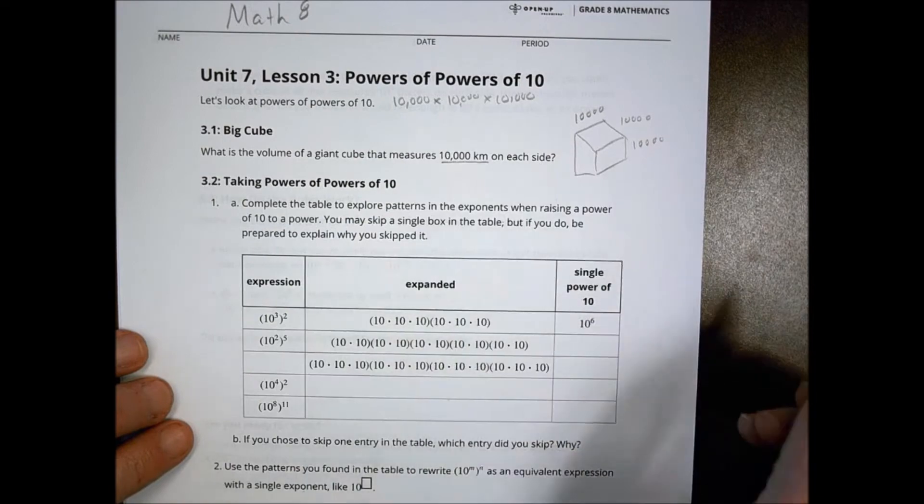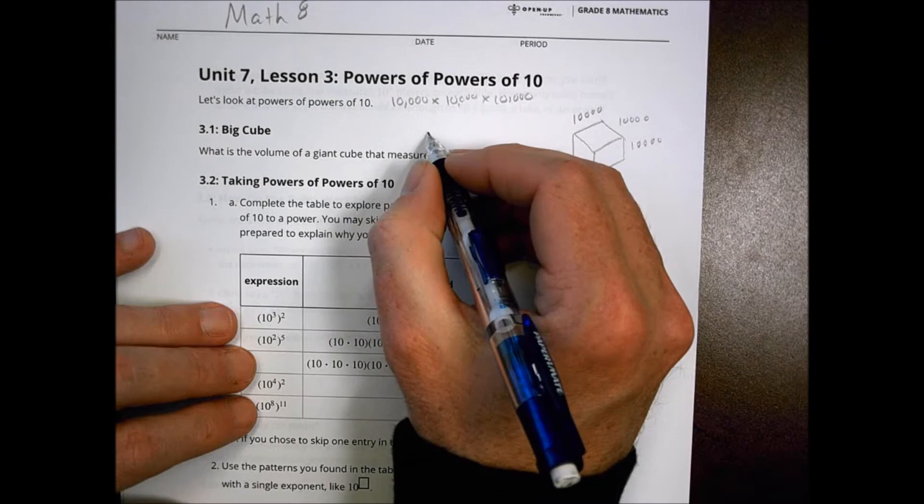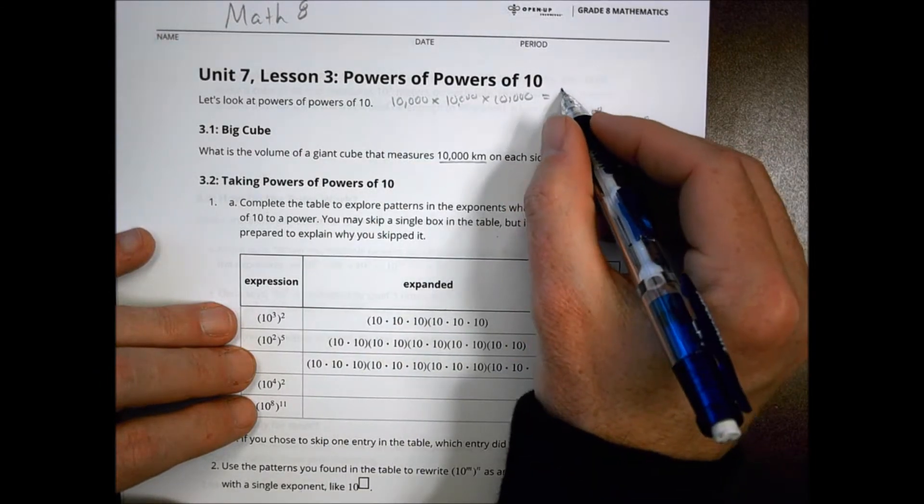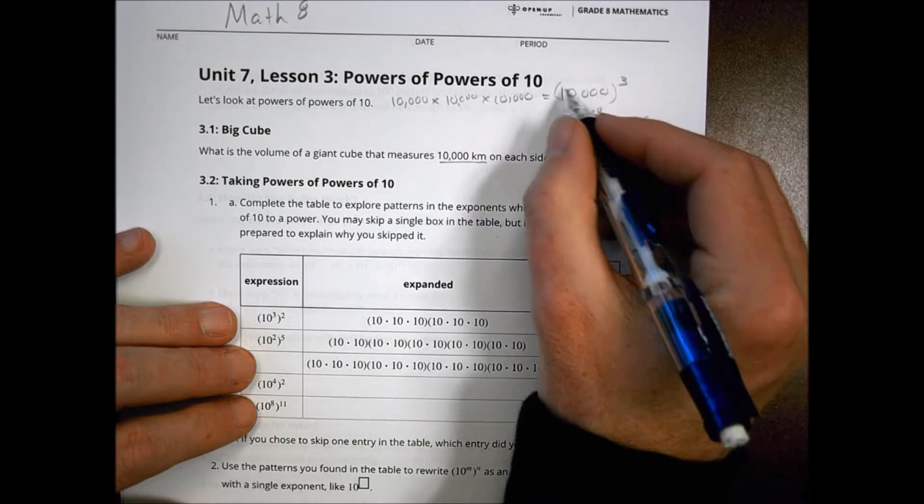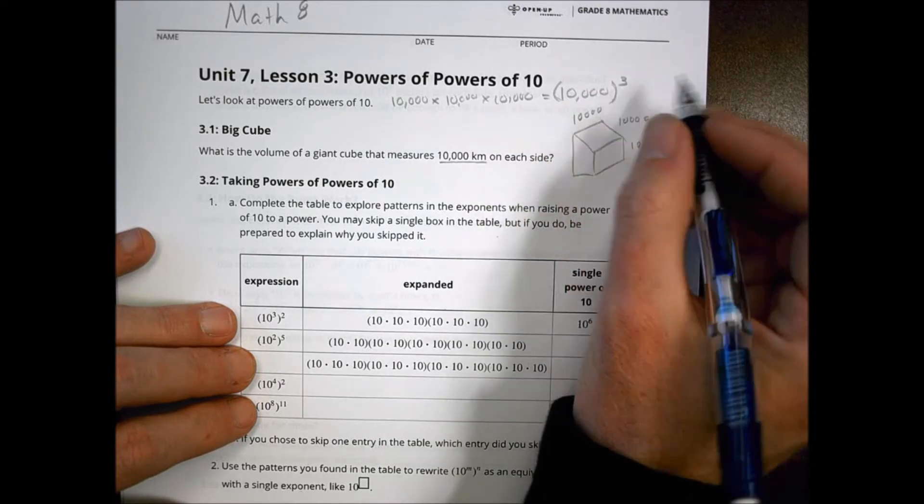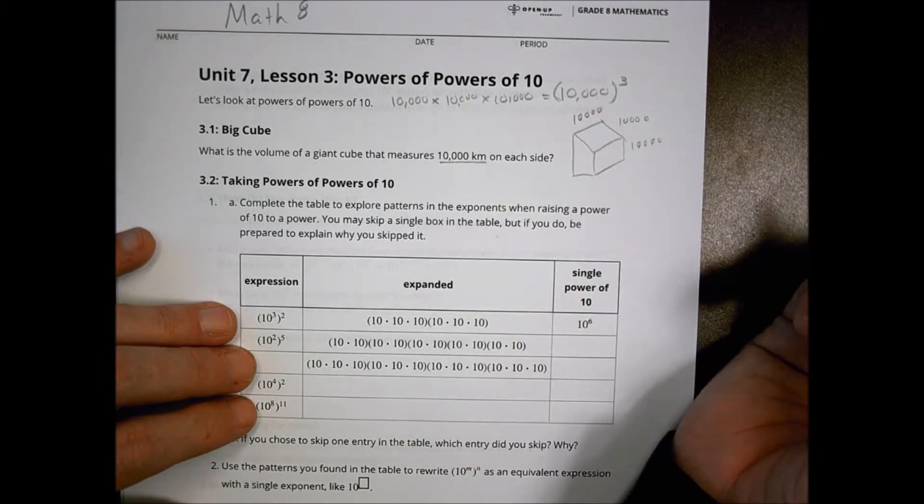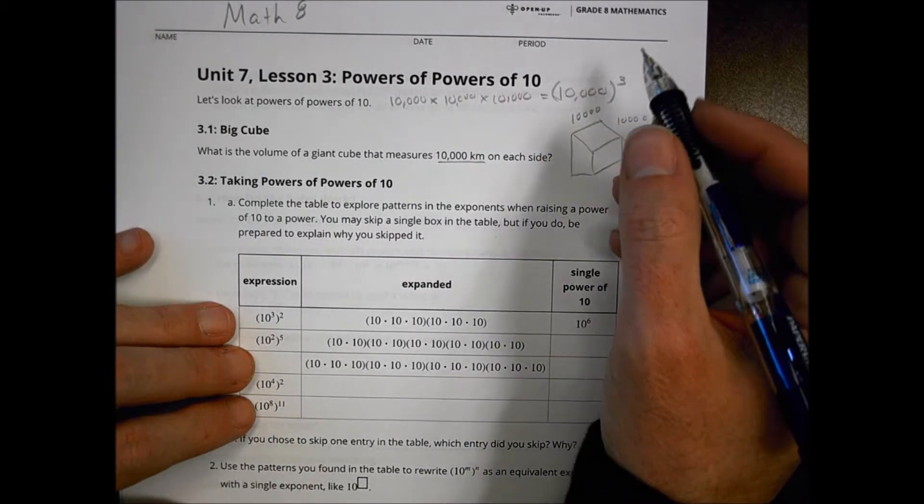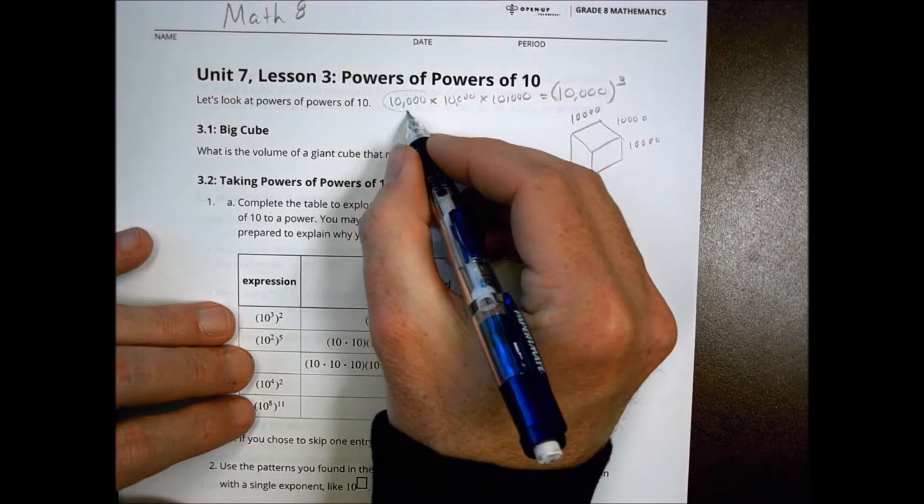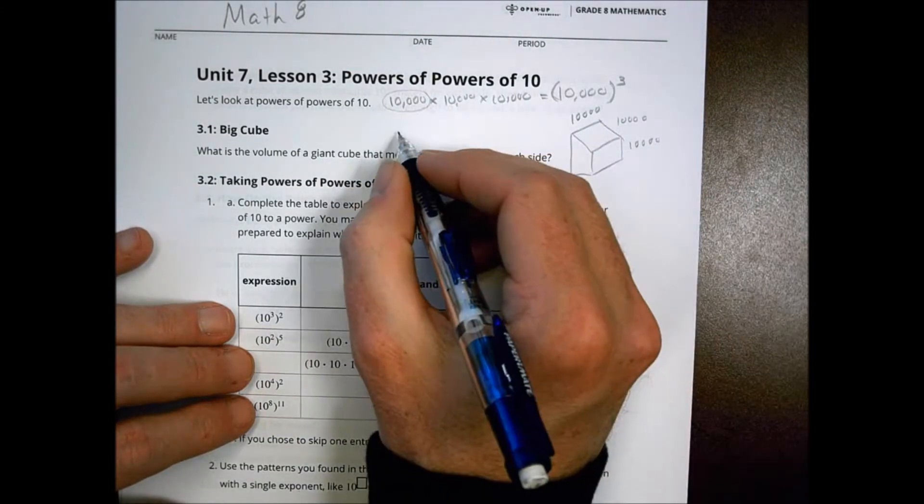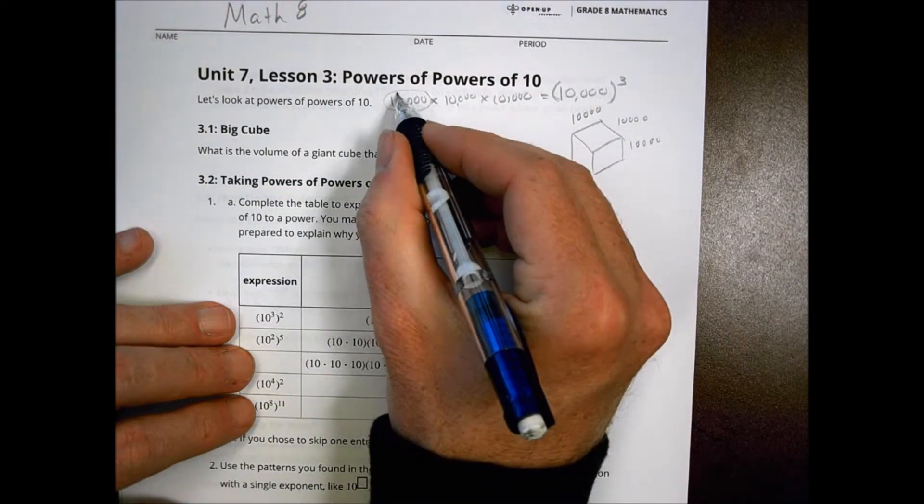So 10,000 times 10,000 times 10,000, which we could simplify—one way of simplifying that would be 10,000 multiplied by itself three different times. There's also another way of thinking about it. If we think back to what we did yesterday, how could I write this as a base 10 number? If we take the number 10 and make it a base 10, we basically just count the zeros.